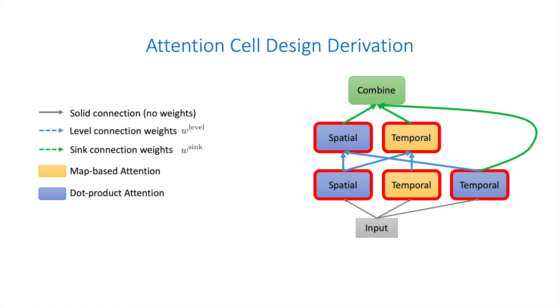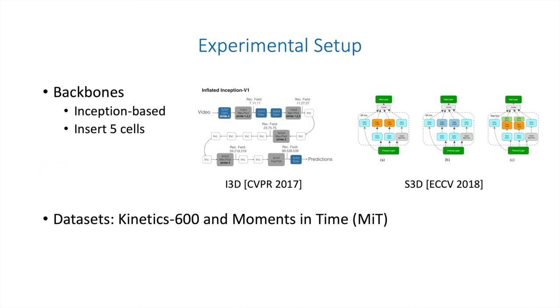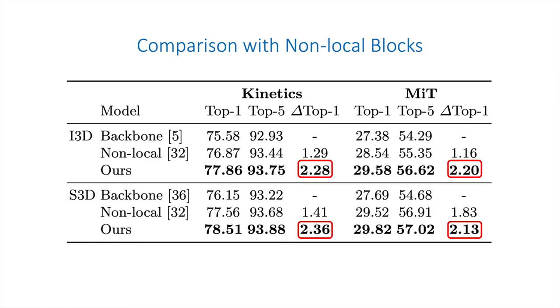We insert the discovered attention cells into the backbone and train them from scratch to evaluate its performance. We consider two backbones, I3D and S3D. Both of them are constructed based on the inception network. In the experiment, five cells are inserted into the backbone. We consider two datasets, Kinetics-600 and MIT. We first compare with non-local blocks. Non-local blocks are the state-of-the-art manually designed attention cell for video classification and are the most direct competitor of our automatically searched cells. Let's look at the red box, which are the relative improvements brought by our cells. We can improve the accuracy by more than 2% and outperform non-local blocks on all the combinations of backbones and datasets.